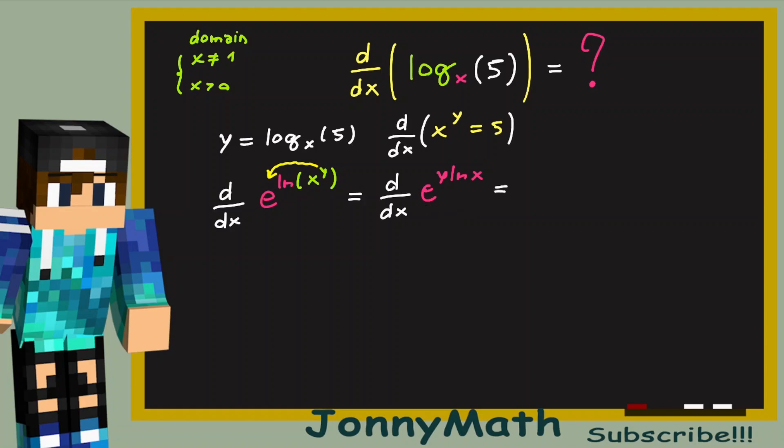And we get the derivative of e to the y times the natural log of x. This is a lot easier, because we have e as the base. So the derivative of this exponential is the exponential. So e to the y natural log of x times the derivative of the exponent. So we have times d over dx of y times the natural log of x. Now, and remember that all of this equals 0.